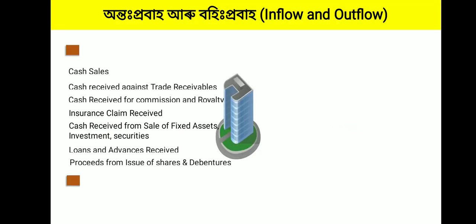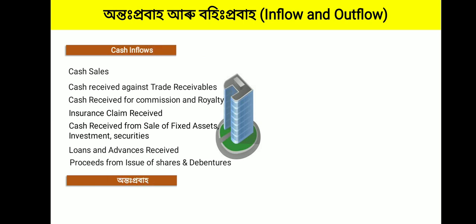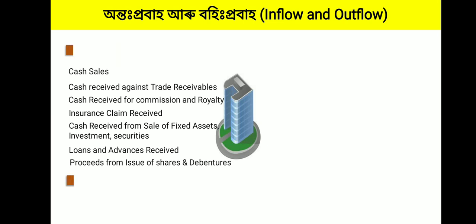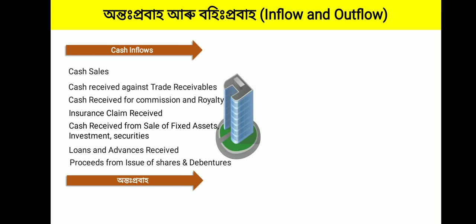Examples of Cash Inflows include: Cash Sales, Cash Receipt Against Trade Receivable, Cash Receipt for Commission and Royalty, Insurance Claims Receipt, Cash Receipt from Sale of Fixed Assets, Investments, Securities, Loans and Advances Receipt, and Proceeds from Issue of Shares and Debentures.